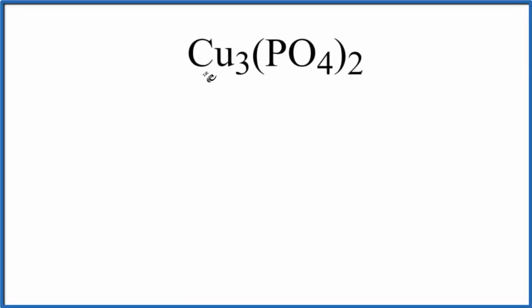To find the number of atoms in Cu₃(PO₄)₂, this is copper 2-phosphate, let's write the element symbols first. We have Cu for copper, P for phosphorus, and then we have oxygen.